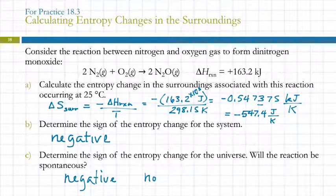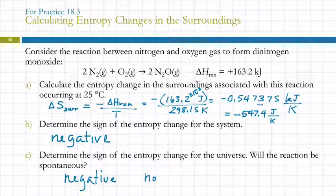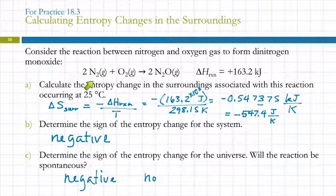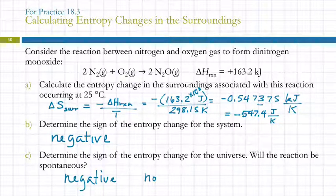To determine the sign of the entropy change for the system, we can look at the states of matter present. If things are changing from solids into gases, that would probably be an increase in entropy. Here we have changes in numbers of particles — going from three particles of gas to two. That is more orderly; there are fewer places to put energy, so entropy is going down.